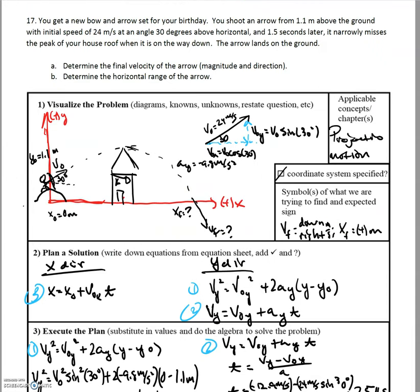So moving on to the last problem. We have you get a new bow and arrow set for your birthday. You shoot an arrow from 1.1 meters above the ground with an initial speed of 24 meters per second at an angle of 30 degrees above the horizontal. 1.5 seconds later it narrowly misses the peak of your house roof when it's on the way down. The arrow lands on the ground. So that's actually a key piece of information.